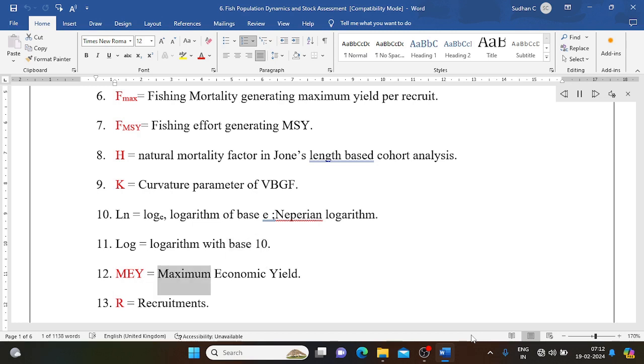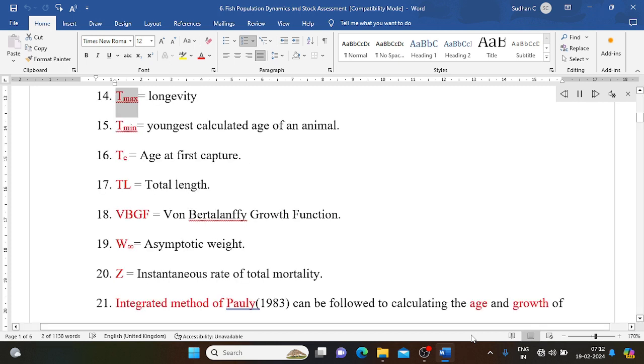MEY equals maximum economic yield. R equals recruitments. T max equals longevity. T min equals youngest calculated age of an animal. Tc equals age at first capture. TL equals total length. VBGF equals Von Bertalanffy Growth Function. W infinity equals asymptotic weight. Z equals instantaneous rate of total mortality.